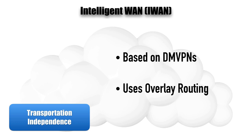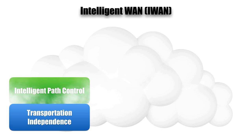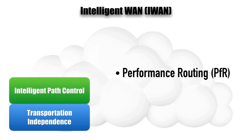So we're shielding our routing protocols from having to know too much about the underlying WAN technology. Another core component of the Intelligent WAN is intelligent path control, using something called performance routing, or PFR. PFR monitors a class of traffic and sees how that class is performing, and based on the type of traffic, we might direct it to a particular WAN link.